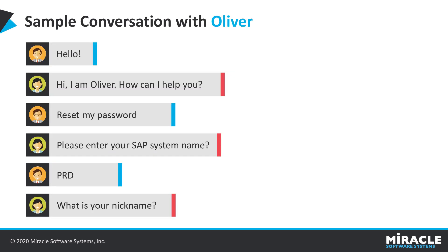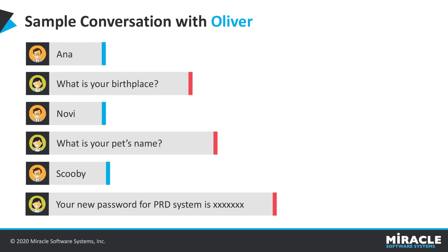A simple conversation with Oliver will be as follows. Oliver will greet you, and you can ask Oliver to reset your password. Oliver then asks your security questions, which you answer. Once you answer these questions, Oliver will present you with a temporary password, which you can use to log into your system and then reset your SAP password to have a new password.